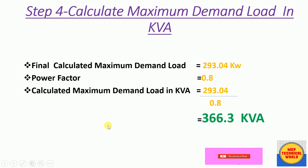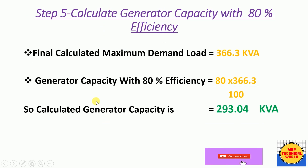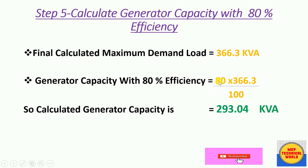In Step 5 we calculate the generator capacity at 80% efficiency, since diesel generators generally operate at 80% efficiency. The maximum demand load is 366.3 kVA. Generator capacity = (80 × 366.3) / 100 = 293.04 kVA.